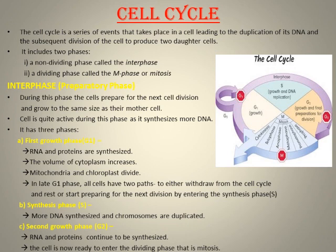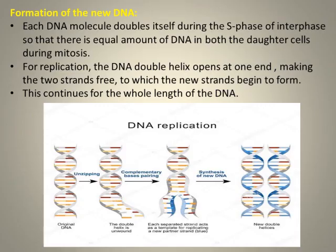Now, how does the formation of new DNA take place? Each DNA molecule doubles itself during the S phase of interphase so that there is an equal amount of DNA in both daughter cells during mitosis. For replication, the DNA double helix's two strands open at one end, making the two strands free — follow the diagram as we read.